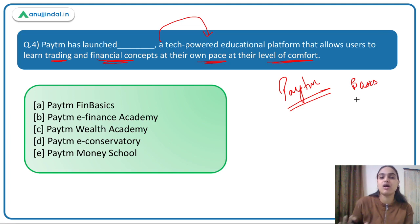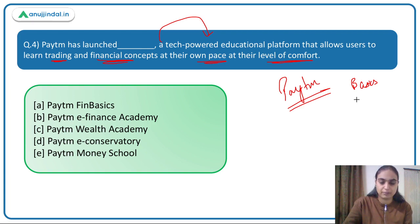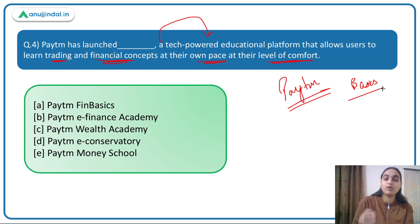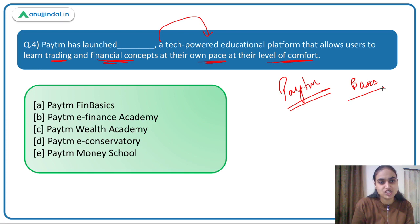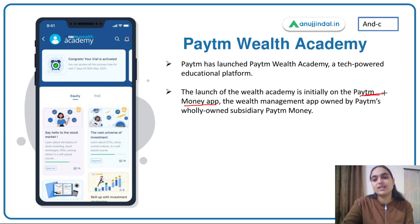Despite having expertise, you still need to keep up with changes in the economy. For experts, courses are available that will keep them updated about new developments. Those with no knowledge can start with a basic course; those who think they have basic knowledge can take a test, and if they score well, move to a higher-level course. Experts also have courses to keep them updated. Paytm has launched this educational platform called Paytm Wealth Academy — the answer is option C — available on Paytm's existing app, Paytm Money, the wealth management app.